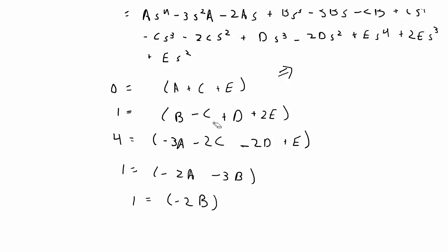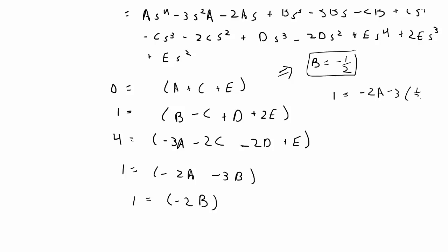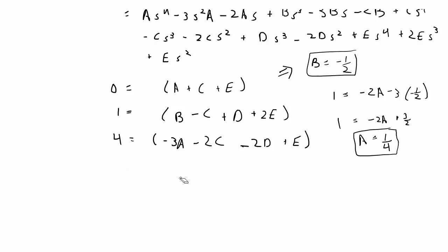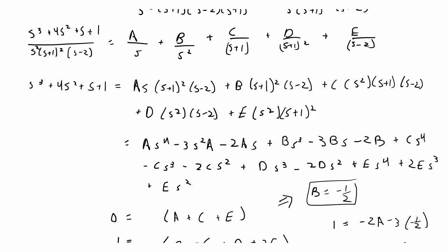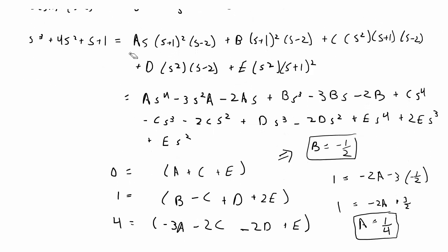Now we have enough information to solve for all variables A through E. From the last equation, B equals negative 1/2. Plugging that into the second-to-last equation: 1 equals negative 2A minus 3 times negative 1/2, so 1 equals negative 2A plus 3/2, giving A equals 1/4.